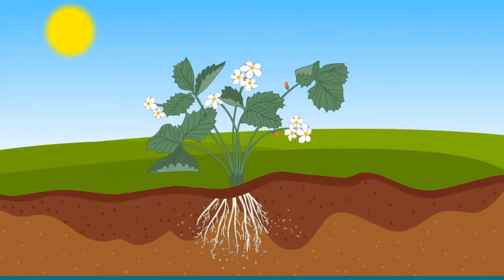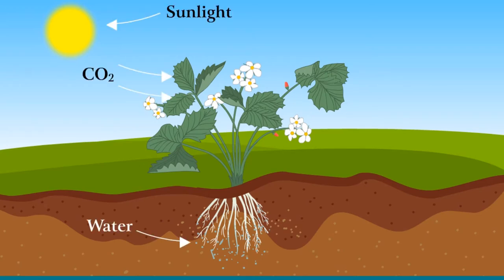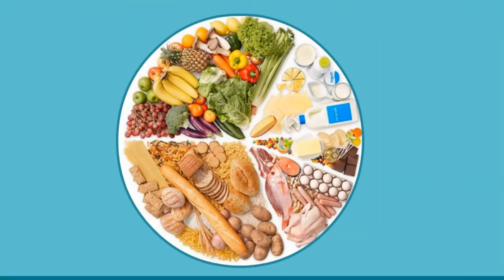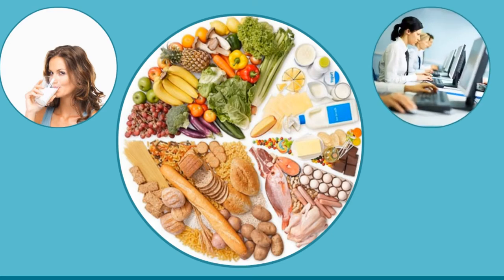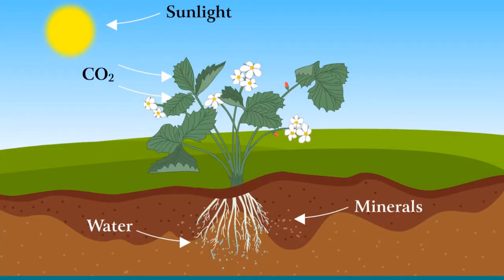Mode of nutrition in plants: plants are the only organisms which can prepare their own food from the raw materials present in their surroundings. They require water, carbon dioxide, sunlight, and minerals for the preparation of their food. Plants use a part of this food for their own nutrition and growth. Nutrition is the mode of taking food by an organism and its utilization by the body. The nutrients are required by living organisms for building their body, for growth, for repair, and for providing energy to carry out the activities of the life processes.